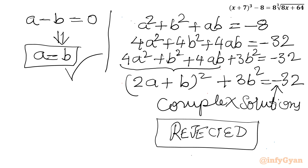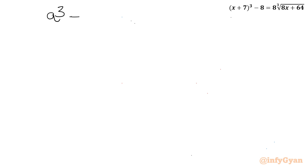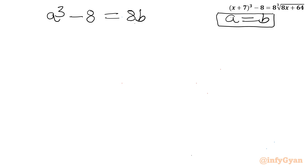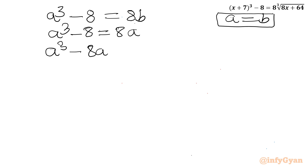Therefore a = b is the only accepted case. Substituting into the first equation a³ - 8 = 8b with a = b, we get a³ - 8 = 8a, giving us the cubic equation a³ - 8a - 8 = 0.